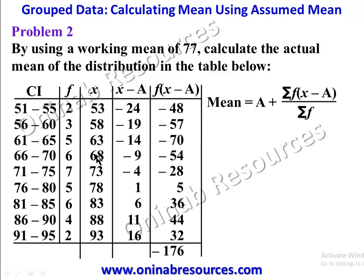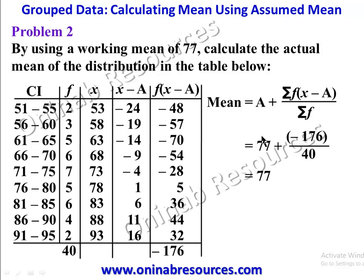Adding up all the f times (x minus a) values gives negative 176. The summation of f is: 2 plus 3 plus 5 plus 6 plus 7 plus 5 plus 6 plus 4 plus 2, giving 40. Substituting into the formula: 77 plus negative 176 divided by 40 gives 77 minus 4.4, which equals 72.6 as the actual mean of the distribution.